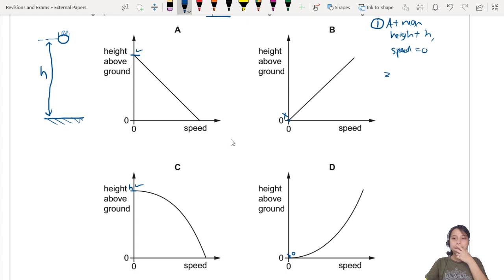And from there you can already know, when you're at ground level, when h is 0, speed should be pretty big, which satisfies A and C. So the question is, is it straight line or is it curve?